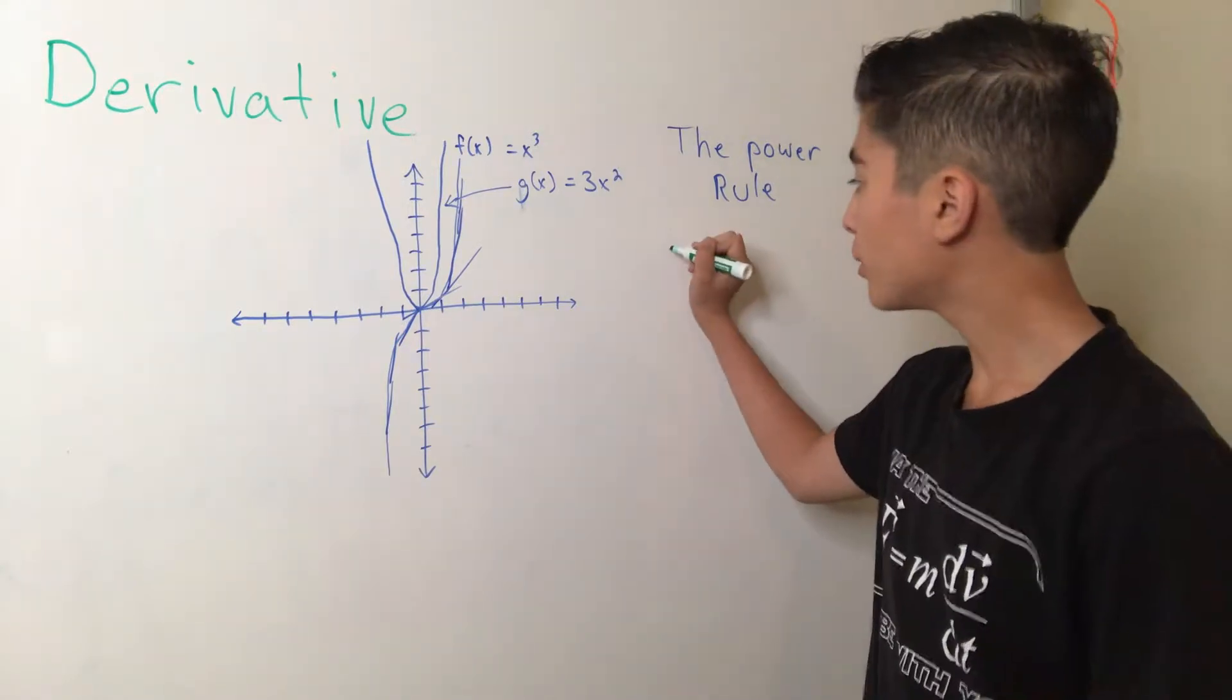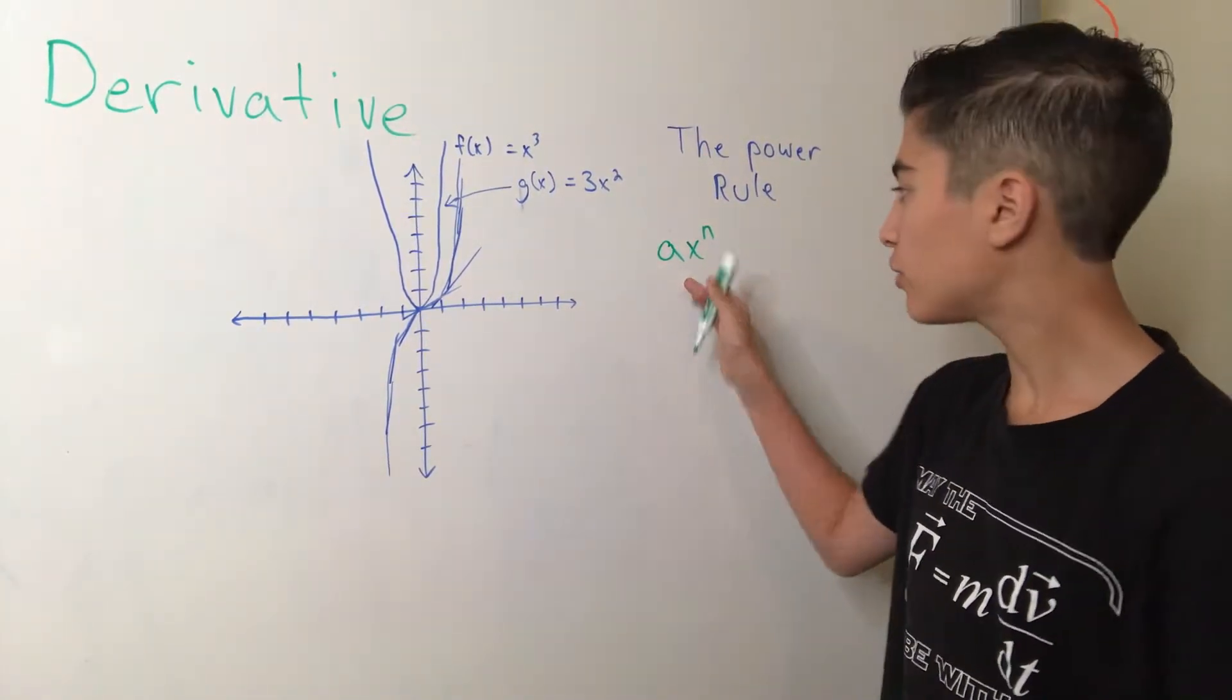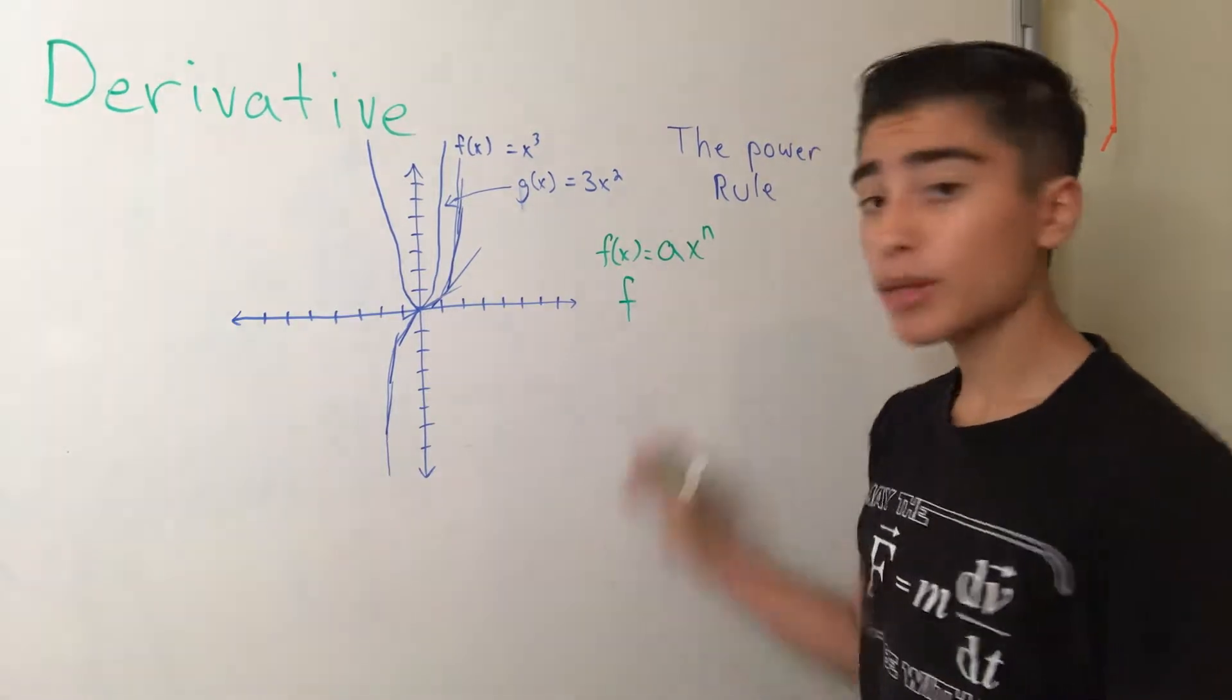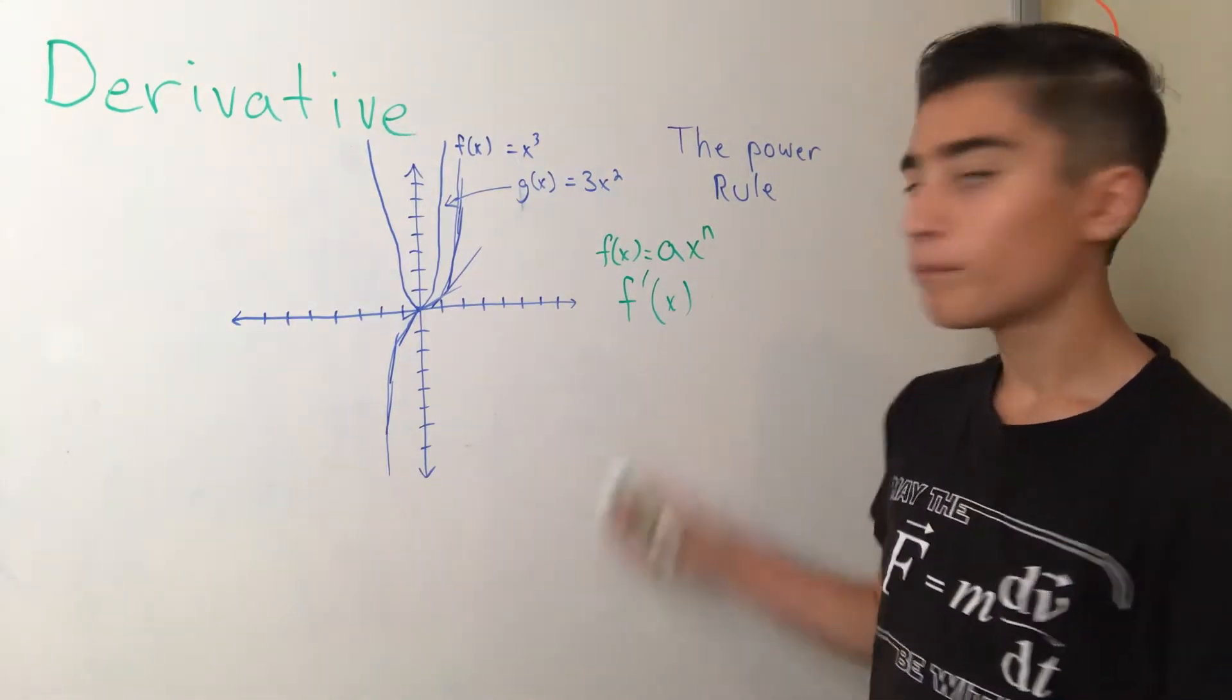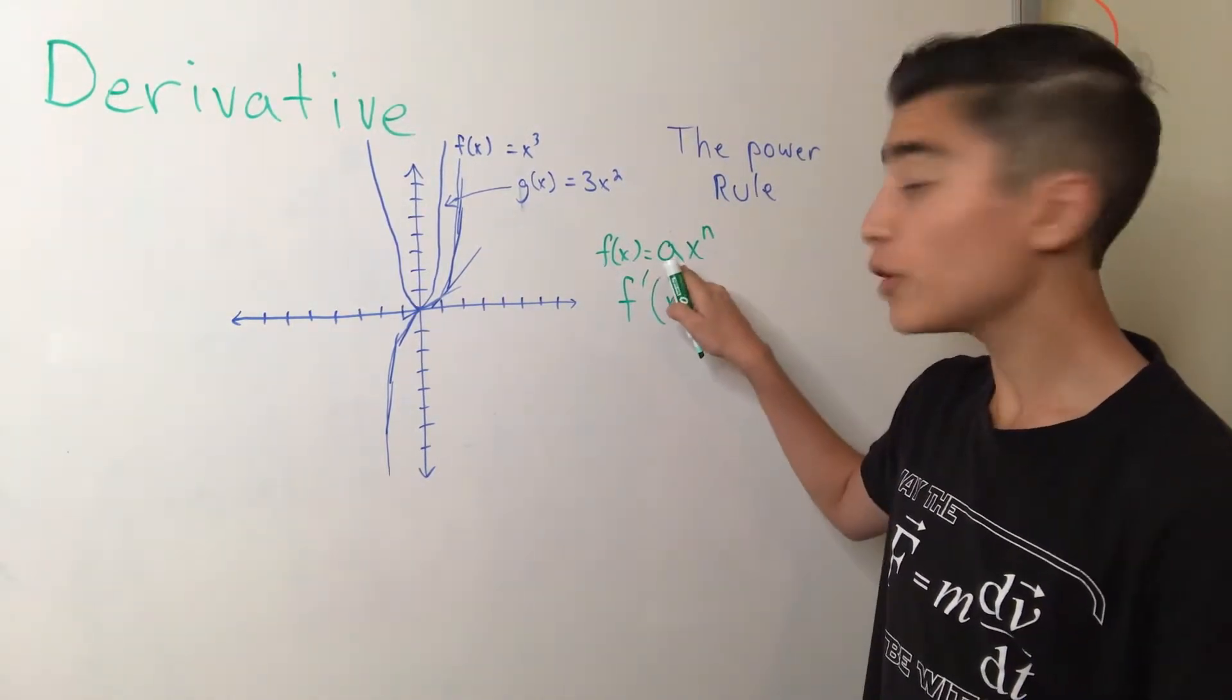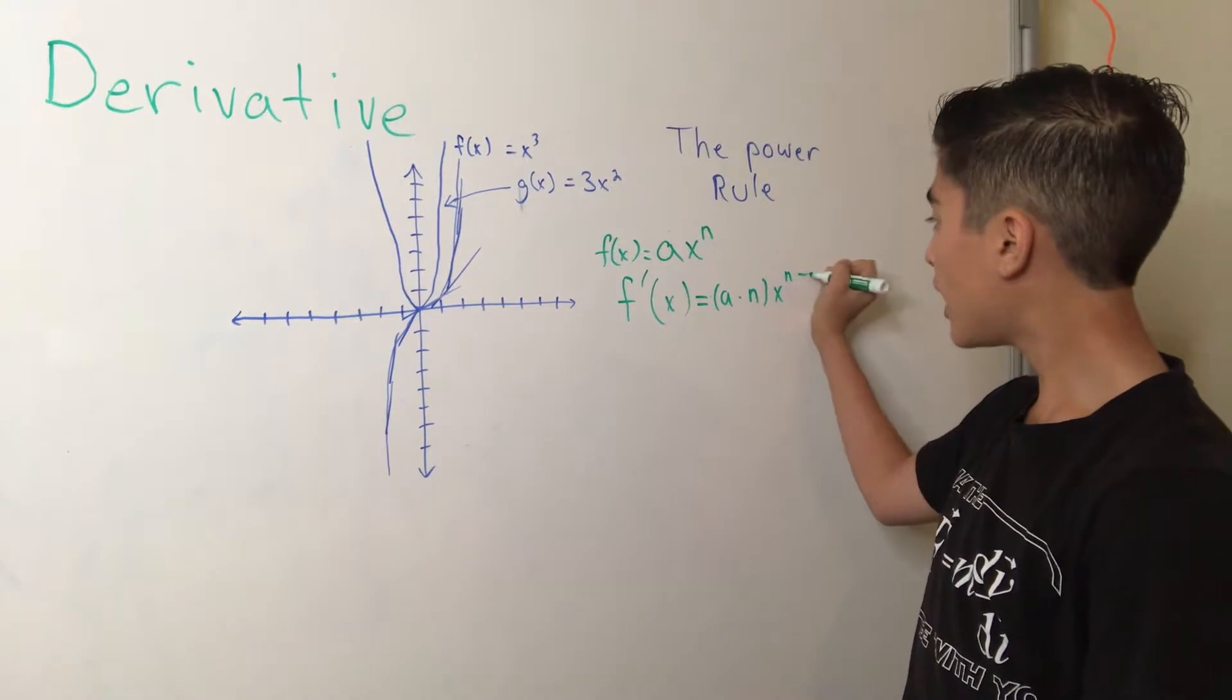Now, let's just say we have some random term. It looks like this. It has a coefficient a times x to the n power. So how do we take the derivative of this function? And for future reference, the notation of a derivative of a function usually looks like this. It's the same as the original function, but with a little apostrophe like that. So, the power rule tells us that our function should equal a times n times x to the n minus 1.